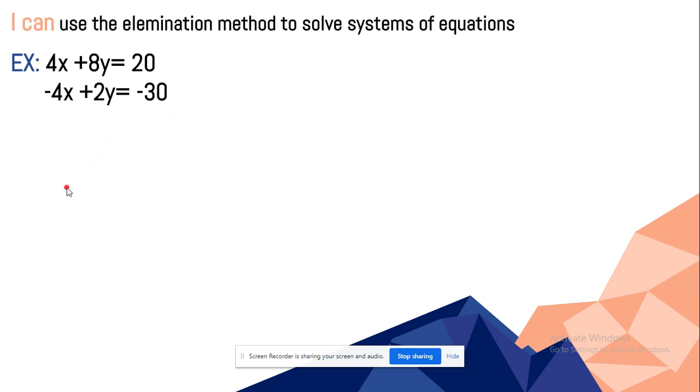The first step is you have to add both equations by each other. So 4x - 4x is 0x. You don't really have to write the zero. And we have 8 + 2 is 10y, and 20 - 30 is -10. Now what we're going to do here is we cancelled one variable, so now we have one variable so we can control it.